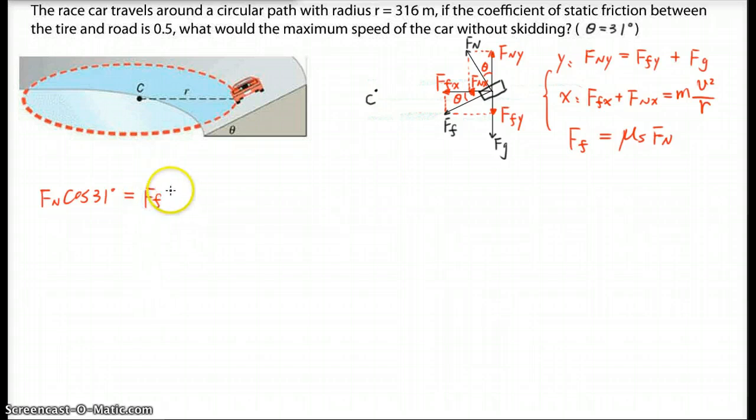Ff Y should be sine 31 degrees plus Fg is Mg. Second equation: Ff cos 31 degrees plus Fn sine 31 degrees should equal M V squared over R. And then Ff equals mu S, which is 0.5 times Fn.